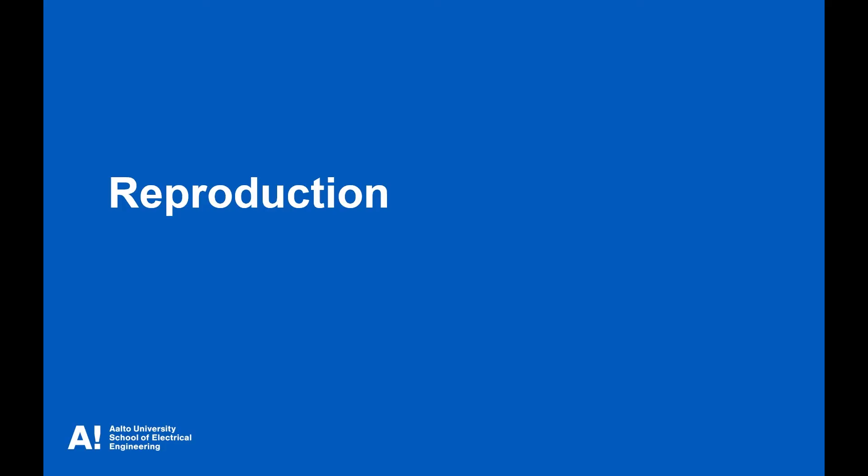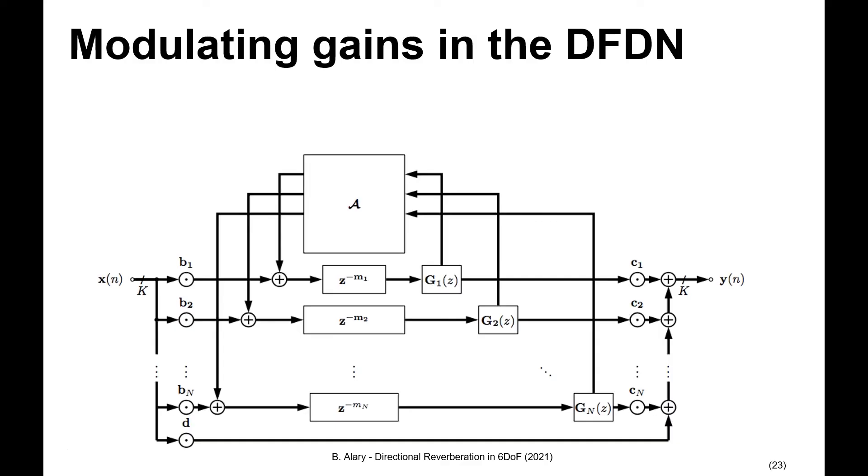So now that we have these analyzed values, how can we use them to inform artificial reverb? Now if we go back to the flow diagram for the DFDN that we showed earlier, we see that we can use the measured EDC zero values that are direction dependent, as well as direction and frequency dependent estimated T60 values to inform both the input gain and the multiband EQ located at the exit of each delay group. And these values, these gains, can be modulated in real time to accommodate the scenarios of 6 degrees of freedom.